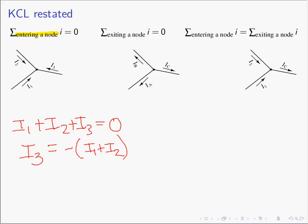Remember, all currents have two names — you can write a current with the arrow pointing one direction, or with the arrow pointing the opposite direction. If we take currents i1, i2, and i3 and flip them the other direction, the current hasn't changed, but the values become the negatives of what they were. Renaming them iA, iB, and iC — which equal negative i1, negative i2, and negative i3 respectively — we can rewrite KCL as: the sum of the currents exiting a node must equal zero.